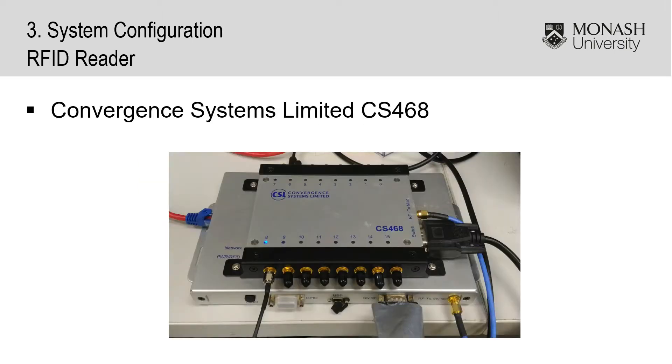The RFID reader we use in this project is the Convergence Systems Limited CS468. It has an Ethernet port to connect to the PC or network and has 16 antenna ports, meaning we can connect up to 16 antennas to the system.